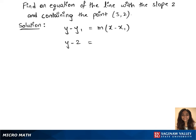y minus y1 is 2, m is the slope 2, times x minus x1 is 3. Let's simplify this now. y minus 2 equals 2 times x minus 3, and 2 times 3 is 6.